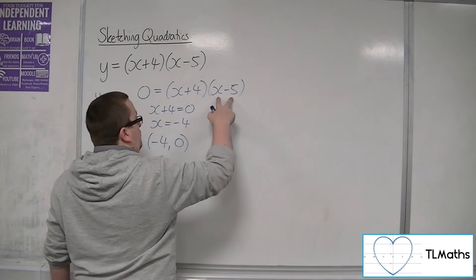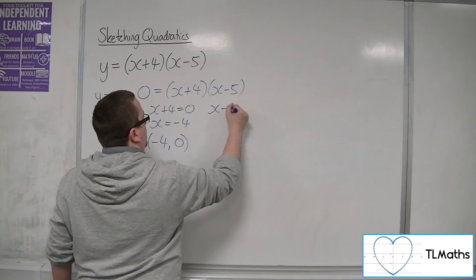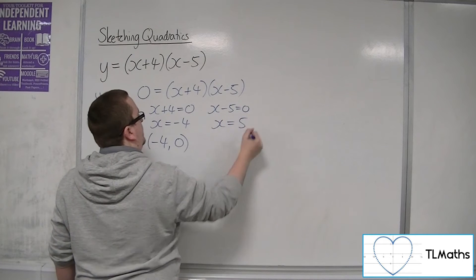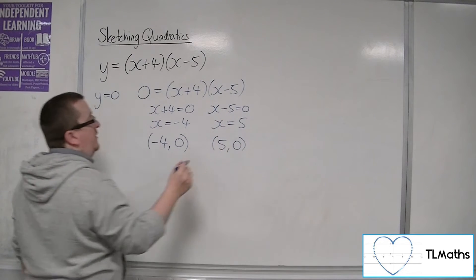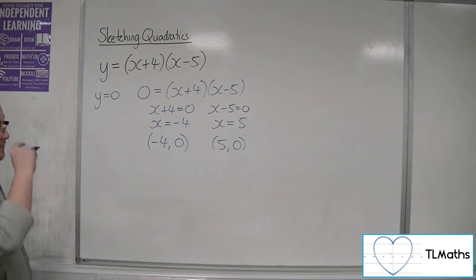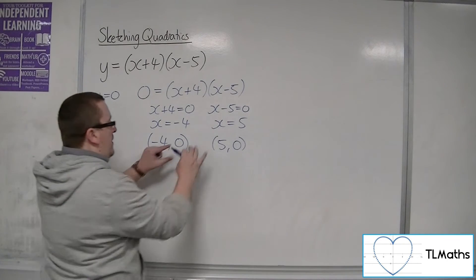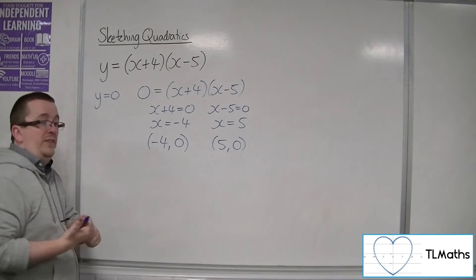If this bracket is 0, then x would have to be 5. So, we know also that it's crossing through the x-axis at (5, 0). So, that deals with where it crosses the x-axis.